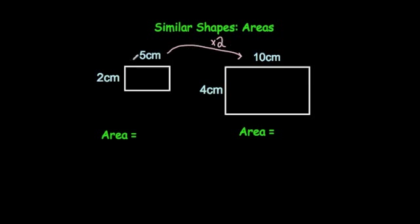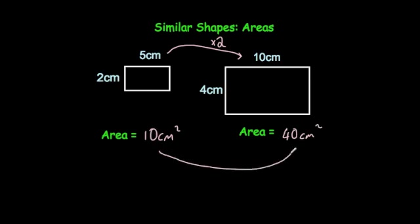Let's have a look at what happens with the areas. 2 times 5, the area for this rectangle would be 10 centimetres squared, and the area for this one is 4 times 10, which is 40 centimetres squared. So as you can see the areas are 4 times bigger. Whenever we multiply the sides by 2, the areas become 4 times bigger.